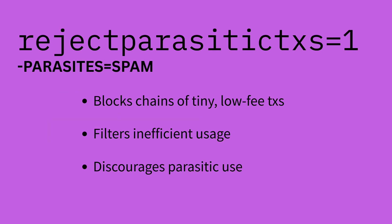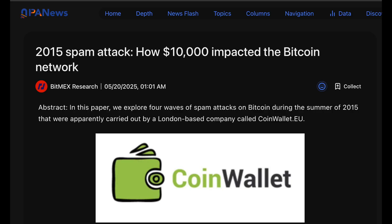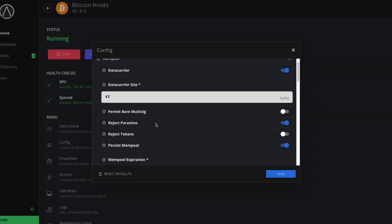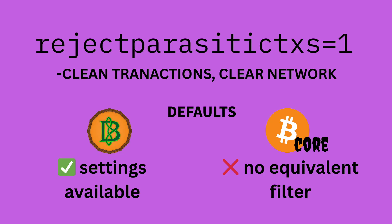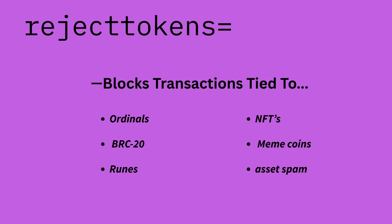Reject parasites is a unique setting in Bitcoin Knots that filters out transactions designed to waste your node's resources — things like low-fee spam, dust outputs, inefficient patterns, and long transaction chains that clog up your mempool. These aren't real payments and they serve no real purpose. We've seen this kind of abuse before, during the 2015 stress tests when the network was flooded with junk to push Bitcoin to its limits. Bitcoin Core doesn't offer this kind of filtering — it relays anything that is valid by consensus — but with Knots you get more control over what your node chooses to process, relay, and spend time on.